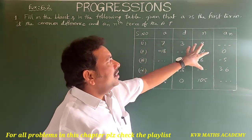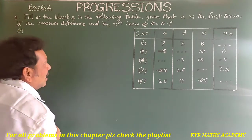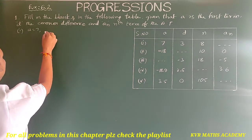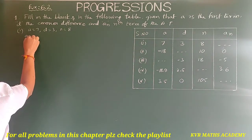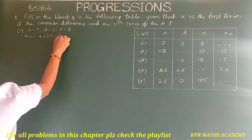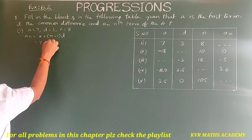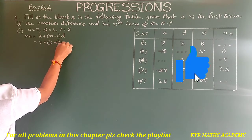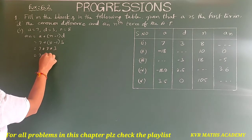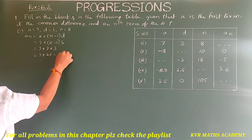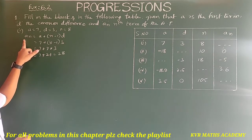Sub-problem 1: a = 7, d = 3, n = 8, and an is unknown. Using the formula an = a + (n - 1) × d: an = 7 + (8 - 1) × 3 = 7 + 7 × 3 = 7 + 21 = 28. So the value of an is 28.